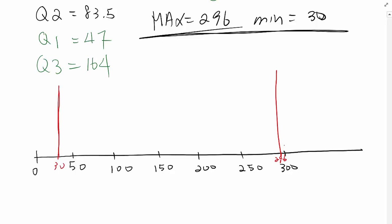Now, using Q1 and Q3 values, draw the boxplot. 47 is around here, and 164 is around here. Based on this, you can draw the box plot and indicate the median value, which is Q2, inside of it. Q2 is 83.5, so I can guess it's around here.